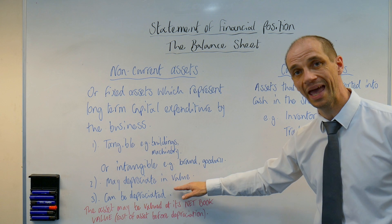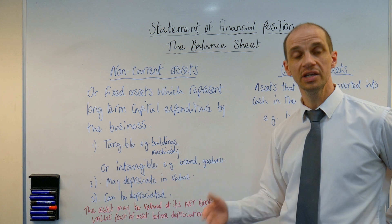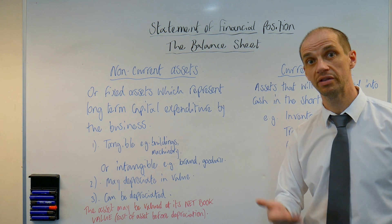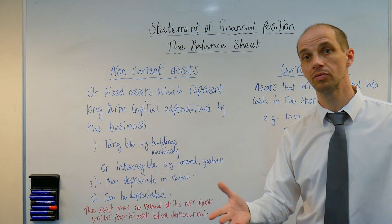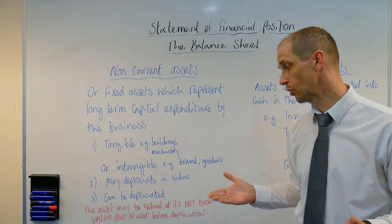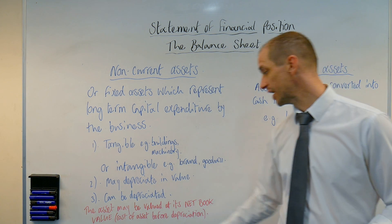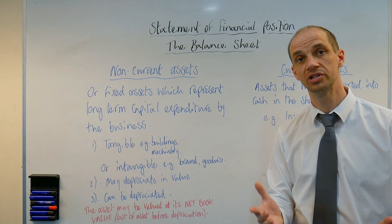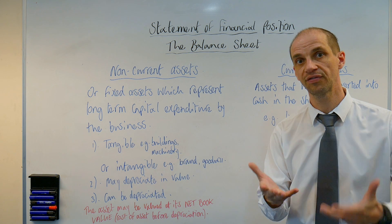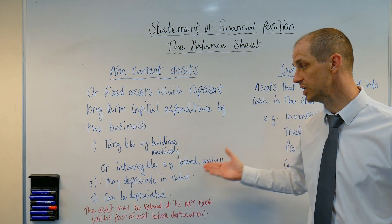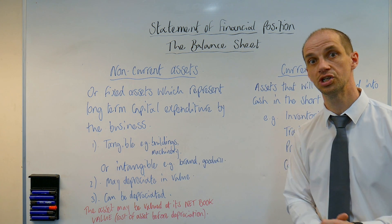That means you can actually allow for depreciation — something we'll look at later — and this is simply writing down the value of the asset, reflecting the wear and tear and impact of time on vehicles and machinery and so on. The asset may be valued at its net book value, that is the cost of the asset before depreciation, or it may be valued at a depreciated level. So there is flexibility for allowing for depreciation of these non-current or fixed assets.